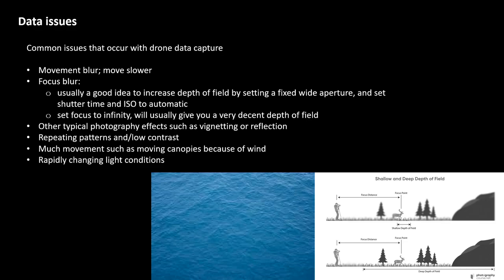Usually it is a good idea to increase depth of field by setting a fixed wide aperture and setting shutter time and ISO to automatic. Setting a fixed wide aperture gives you a deep depth of field, which is generally the best option. Another approach is to set focus to infinity, which also gives a very decent depth of field. You may also suffer from other typical photography effects such as vignetting or reflection, but very specific to drone photogrammetry are problems with repeating patterns and low contrast.